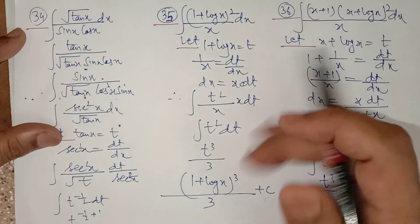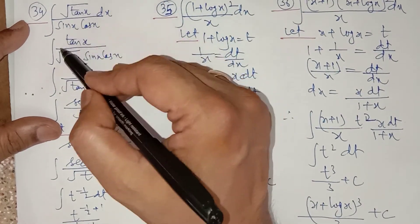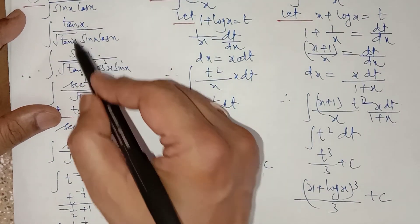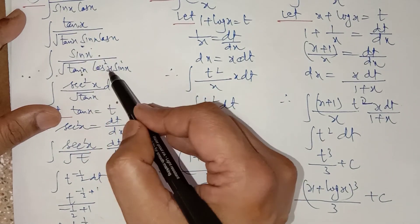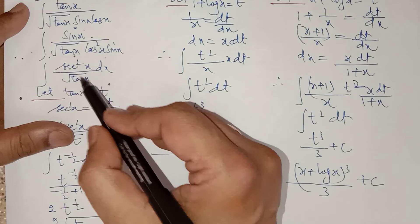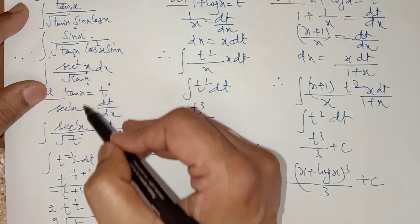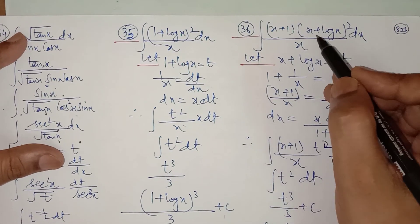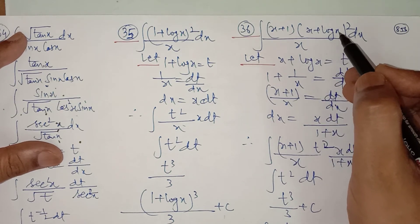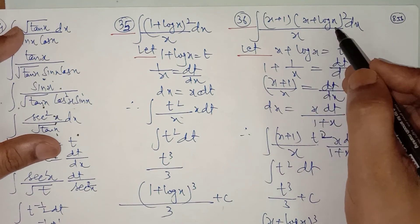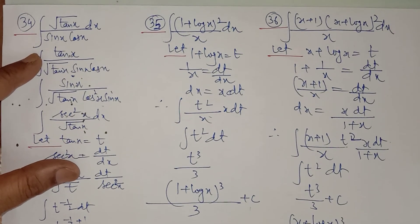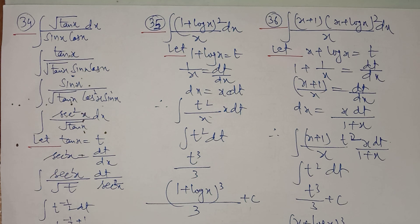Question number 34 is tricky: root(tan x) upon (sin x times cos x). Multiply and divide by root tan x, convert into sine and cos — sin upon cos is tan; sin cancels, cos square comes to numerator giving sec square. Now let tan x equal to t, which cancels, giving 1 upon t. In question 36, let x log x equal to t; (x plus 1 upon x) will be cancelled. This completes the second exercise on integration by substitution. We continue in the next lecture.